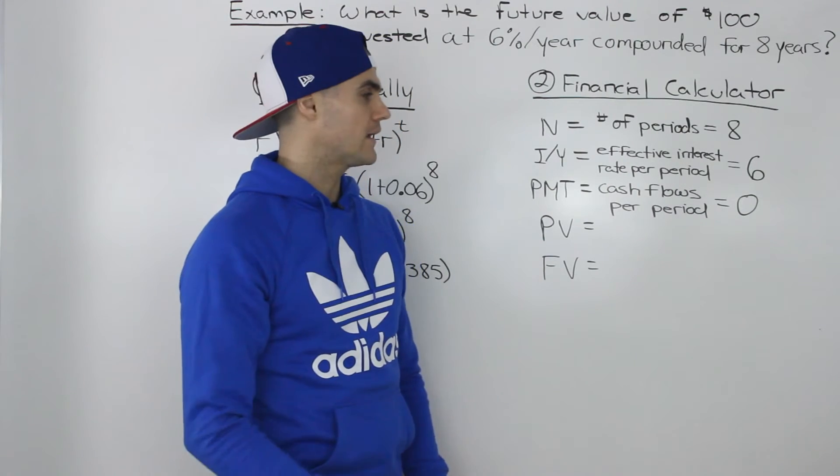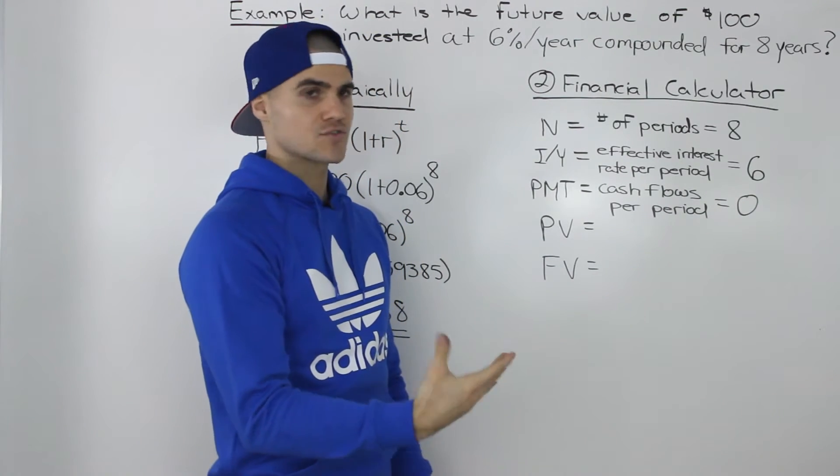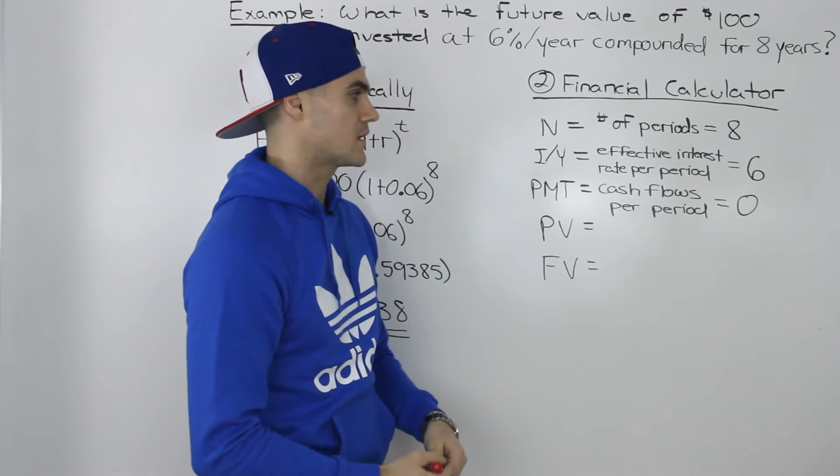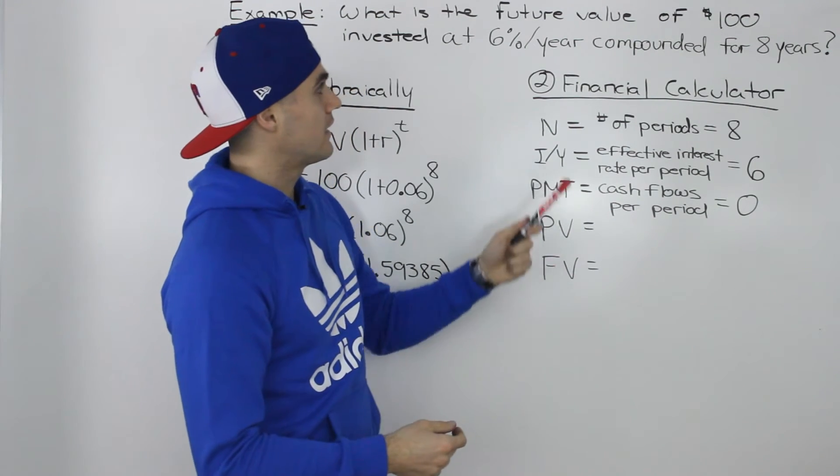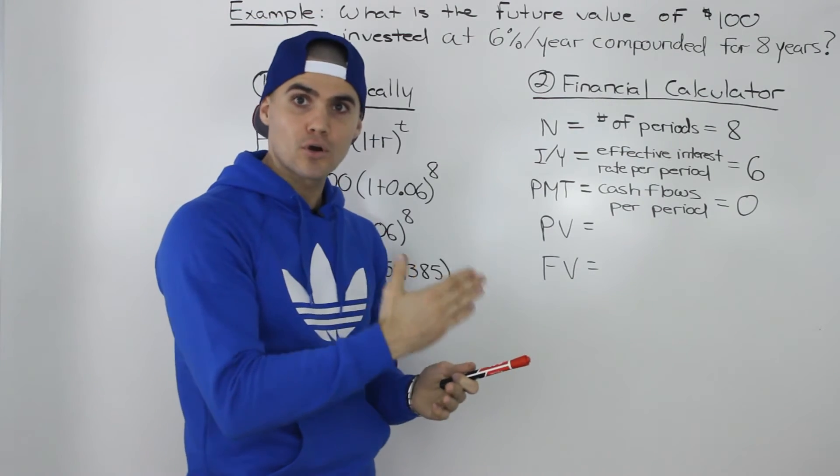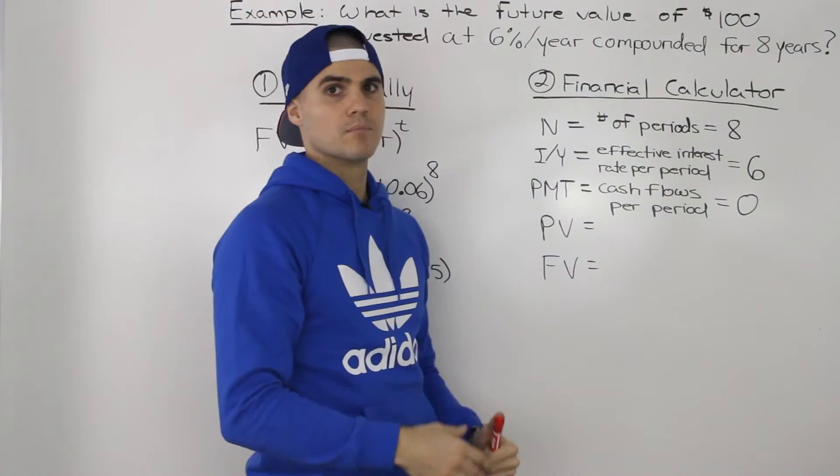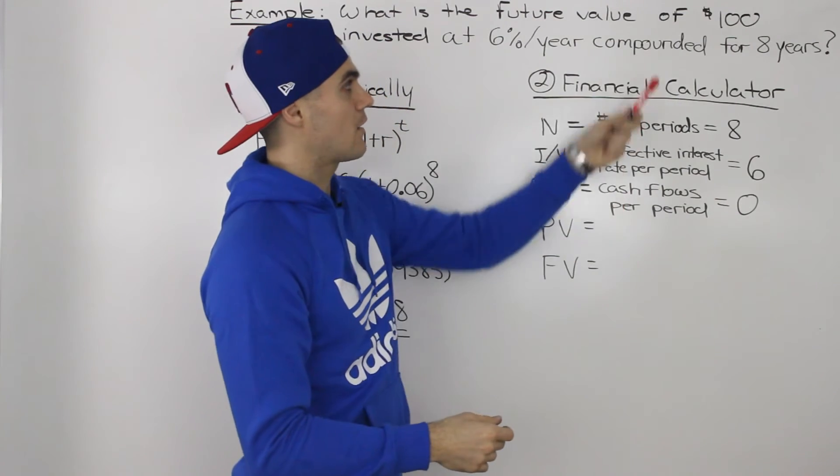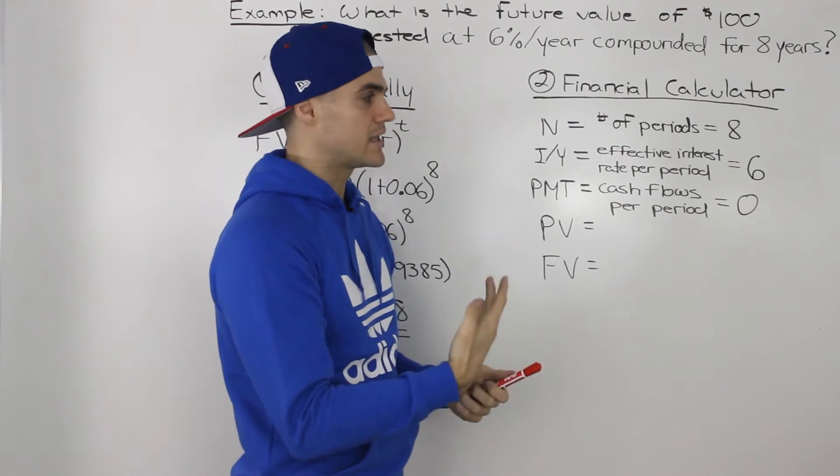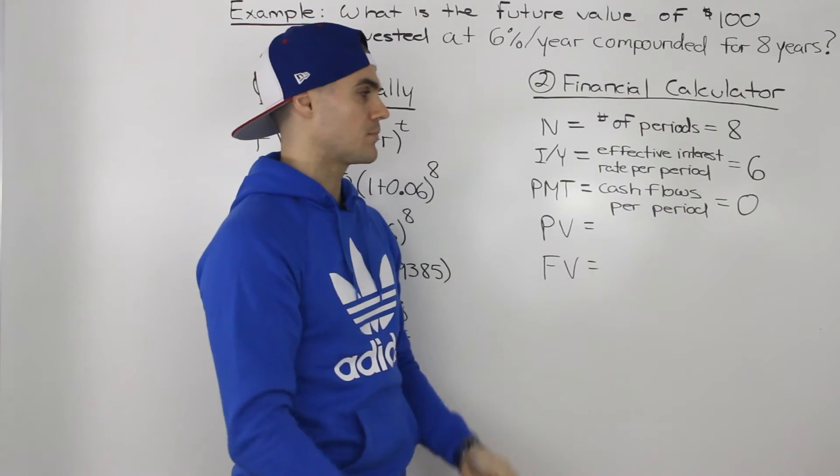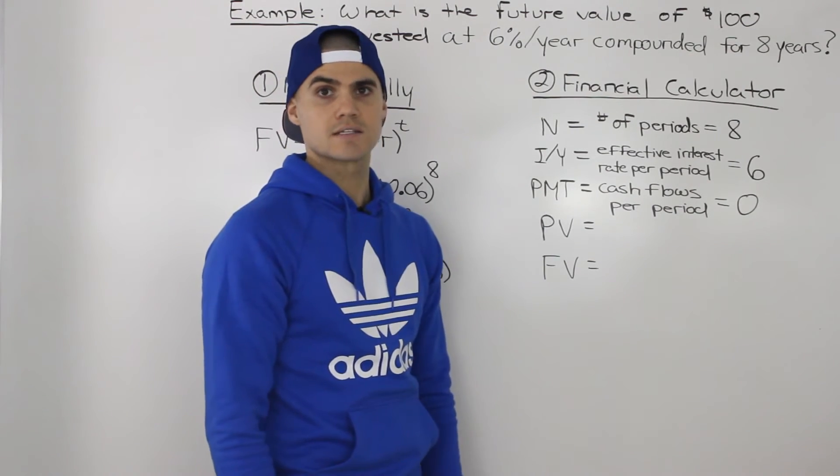Now when we get into dealing with multiple cash flow scenarios, then we'll have amounts that we have to input for PMT. So for example, if we invest $100 per year for 8 years, then this PMT amount would be $100. But because we're only investing that $100 once at the beginning, there are no other cash flows that are happening per period, hence why it's 0 in this case.